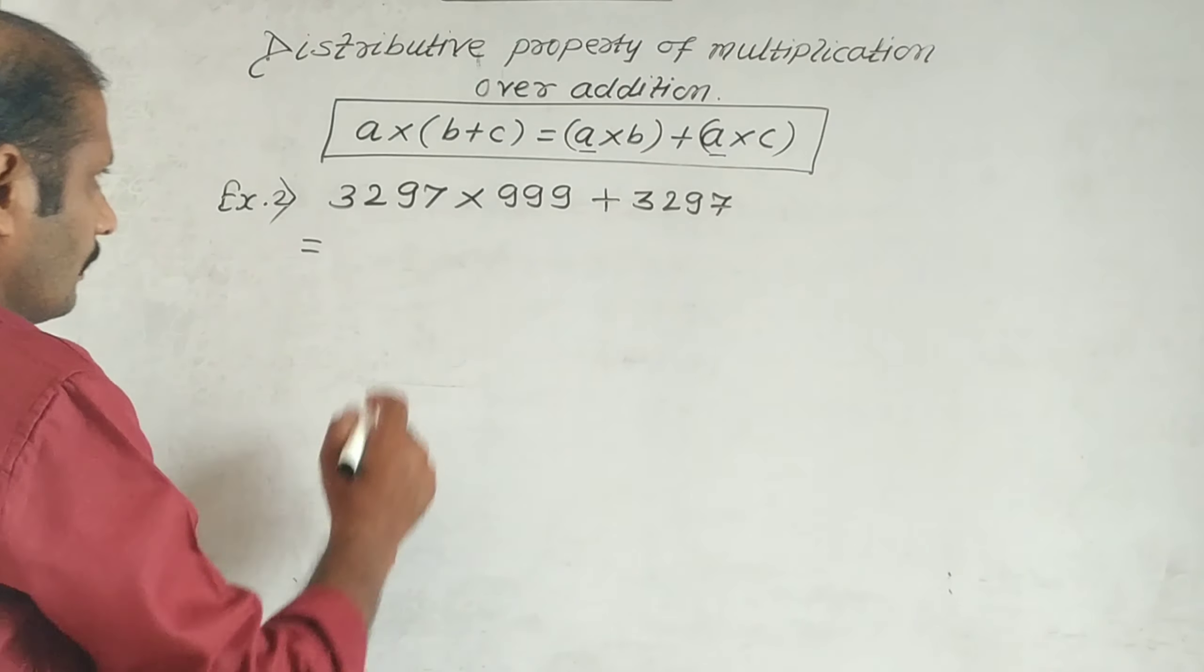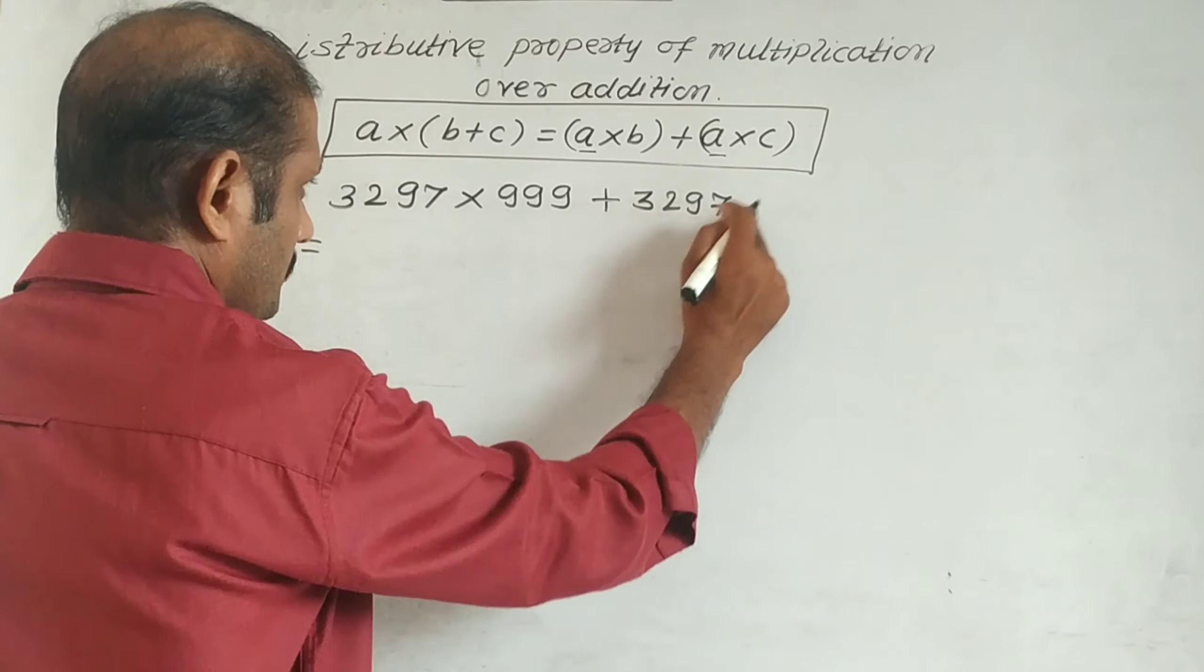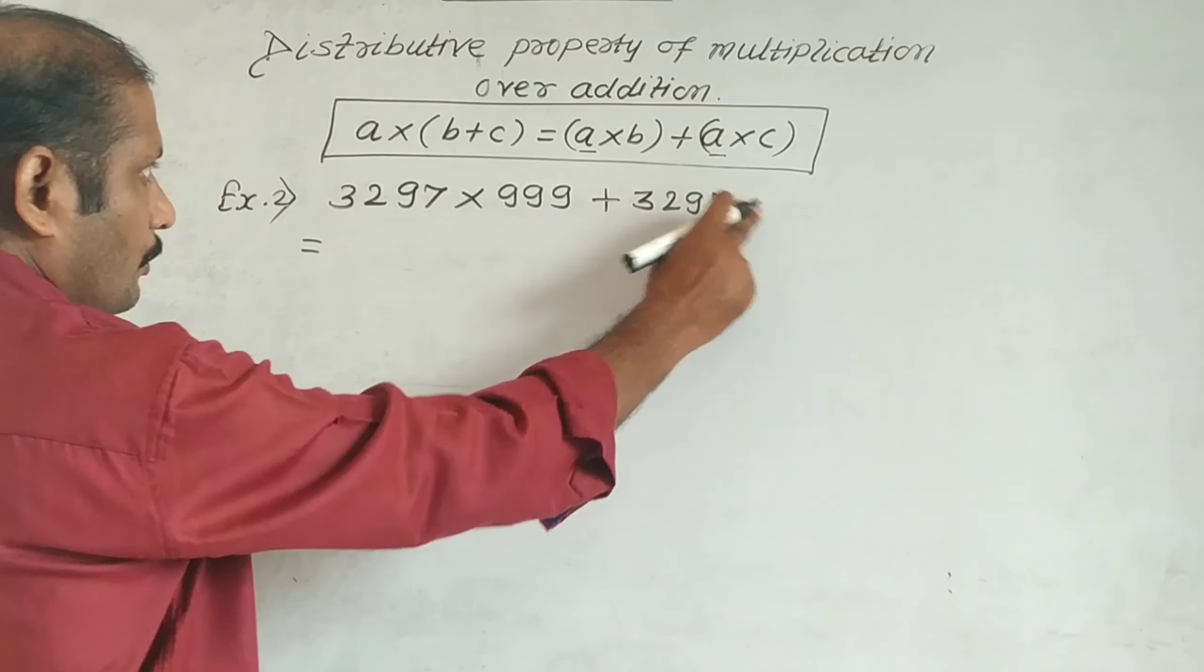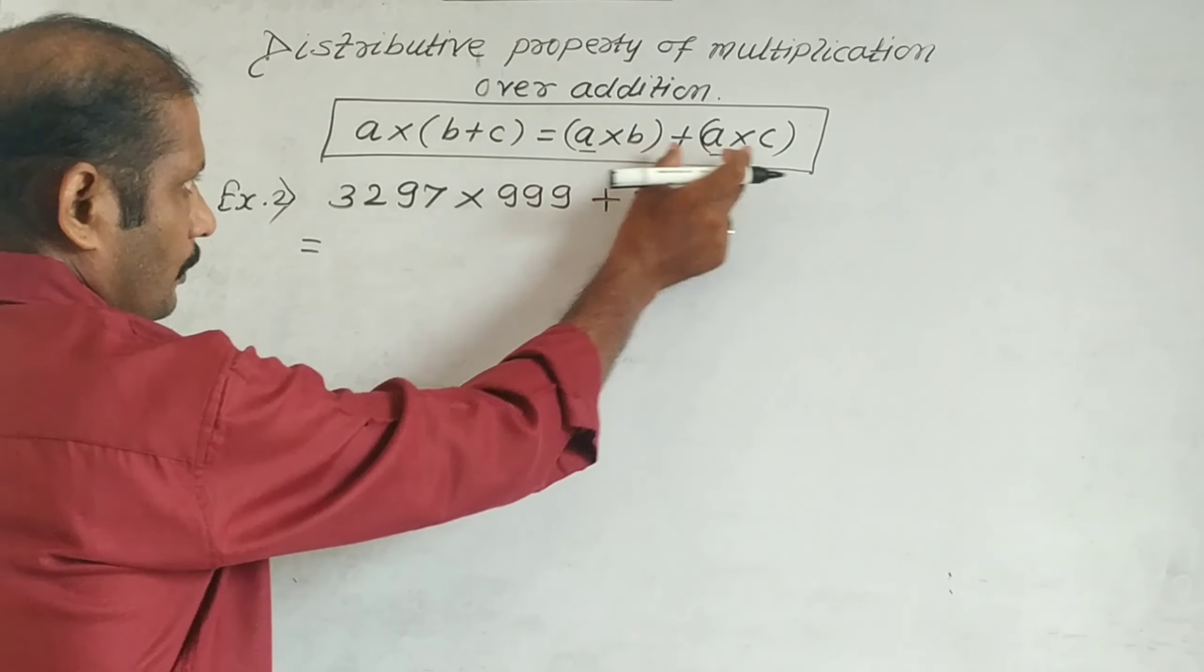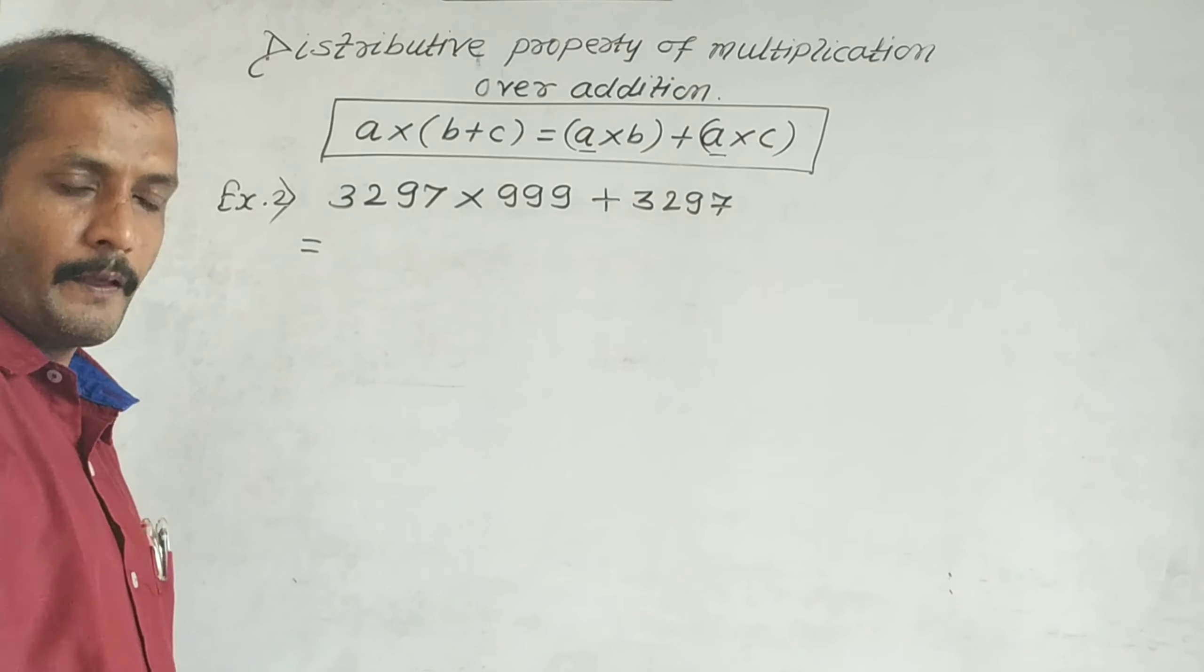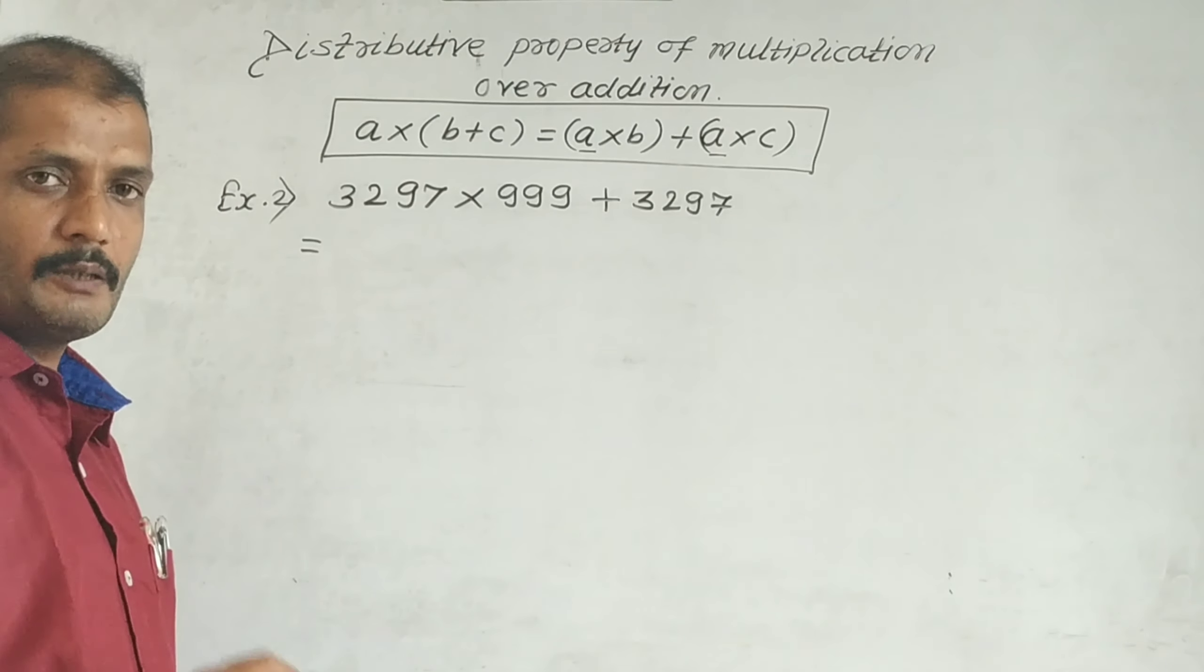We can write 3297 in the form a × b + a × c. We can use the form a × c. You know that if any number is multiplied by 1, the answer is the number itself.